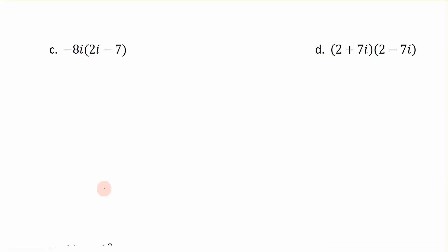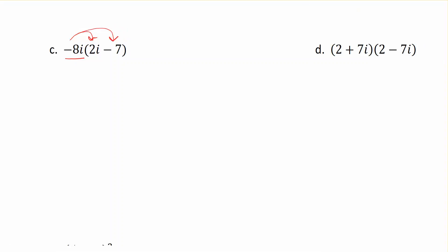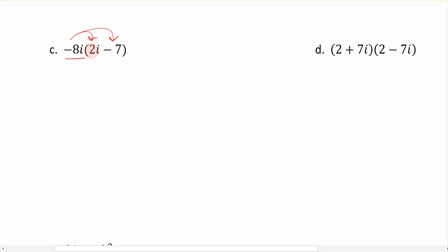Now we want to add another operation to our complex numbers, and that is multiplying. In this video we're going to focus on how to multiply complex numbers. Starting with this first example, I have an imaginary number on the outside that I am going to multiply into the complex number on the inside. We're going to multiply imaginary to imaginary and real to real, just like when I added and subtracted complex numbers. Here I have a negative 8 that I multiply by 2 — both of those are the real numbers — and we multiply those together.